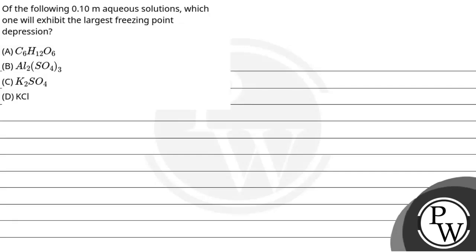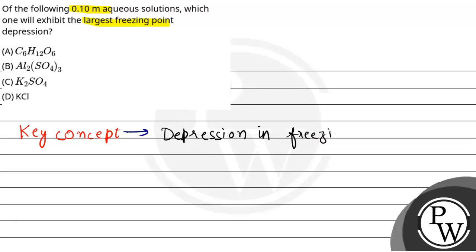Hello, let's see the question. The question is: of the following 0.1 molar aqueous solutions, which one will exhibit the largest freezing point depression? The key concept we have to use in this question is depression in freezing point. When a solute is added to a solvent, the freezing point is lowered. We write delta Tf, and delta Tf equals i (the van't Hoff factor) times Kf times molality.